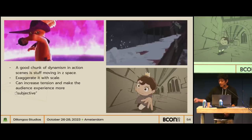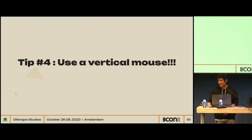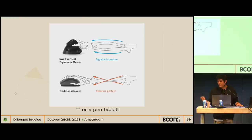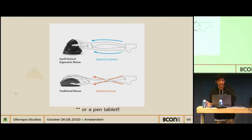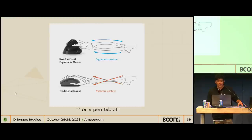My last and favorite tip: use a vertical mouse. Vertical mice keep your arm in a more ergonomic position as you work — they don't have your arm bones twisted — which helps prevent RSIs and carpal tunnel. As an animator and artist, your wrist health is very important. If you're not using a vertical mouse or at least a stylus, I recommend trying it and seeing if it works for you.